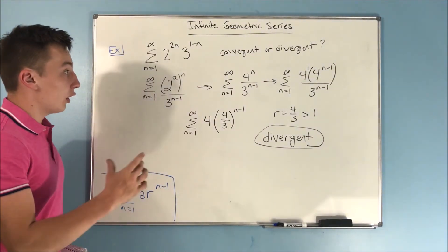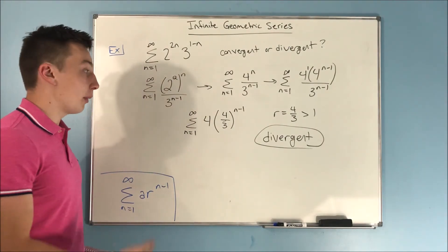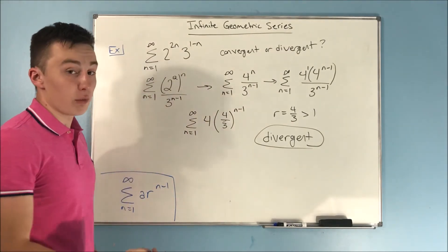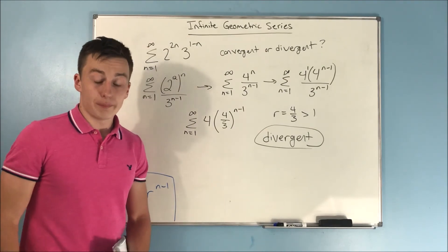The hard part is just getting the expression into the a times r^(n minus 1) form, then recognizing whether the common ratio is between negative 1 and 1. If not, it's divergent. That's going to do it for this video. If this video helped you, make sure to leave a like and subscribe. You can also view the playlist for sequences and series. If these videos are really helping you and you'd like to support me, my Patreon is linked in the description along with some other links. See you soon.